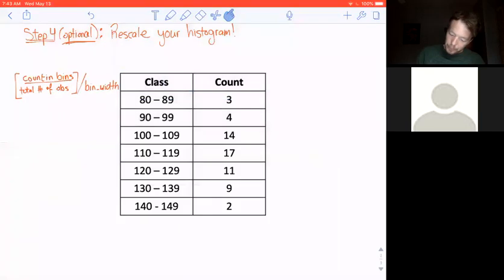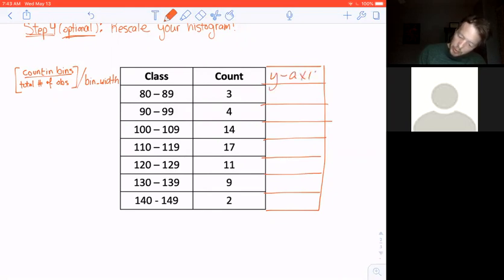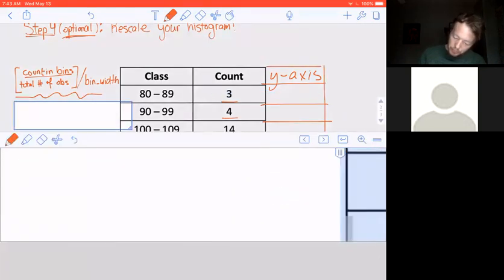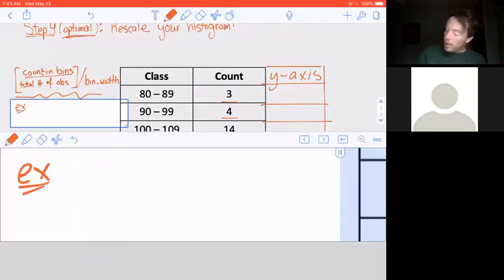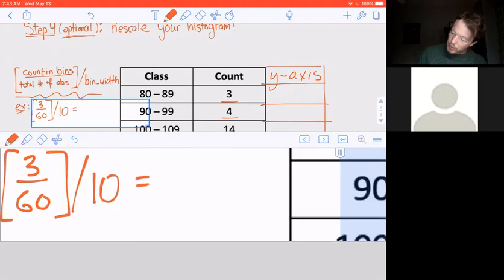With this formula, our goal is to rescale all of the values in our counts column on this table. Don't worry, I am going to motivate why we're doing this, but first I'm just going to show you how to do it. To rescale, you perform this calculation on every single one of these numbers. As an example, let's do it on the first. The count in the first bin is three, so I want three. There are 60 total fifth graders that we examined for this data set, and the bin width was 10. So this is equal to 0.005, which I'm going to put right here.